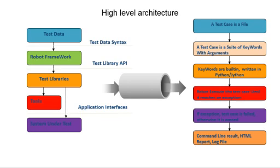Those external libraries internally communicate to tools — here we are referring to third-party tools. Some applications may require communication with third-party tools, and then it will communicate to the system under test. If there is no third-party tool, it will directly communicate to the system under test.